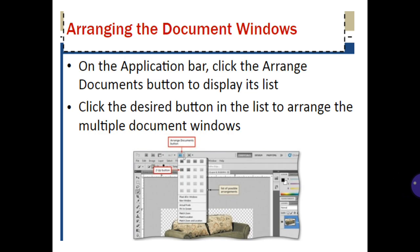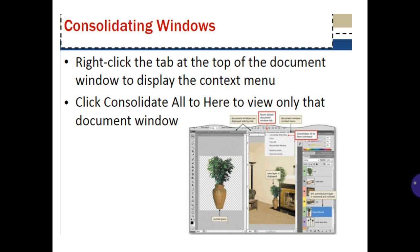Arranging document windows: on the application bar, click the Arrange Documents button to display its list. Click the desired button in the list to arrange multiple document windows. Consolidating windows: right-click the tab at the top of the document window to display the context menu. Click Consolidate All to view only that document window.